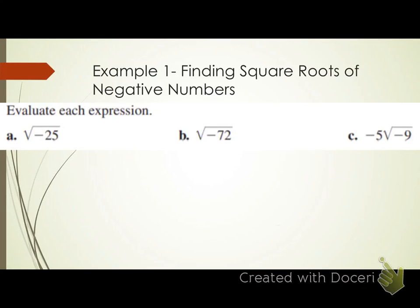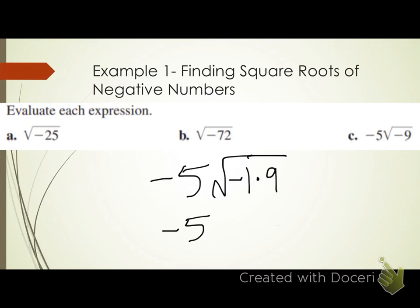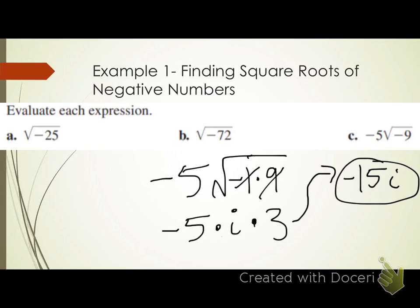For letter c, the square root of negative 1 is i, and the square root of 9 is 3. The radical is now gone. Multiplying, negative 5 times 3 gives me negative 15i. So the simplified version of negative 5 times the square root of negative 9 is negative 15i.